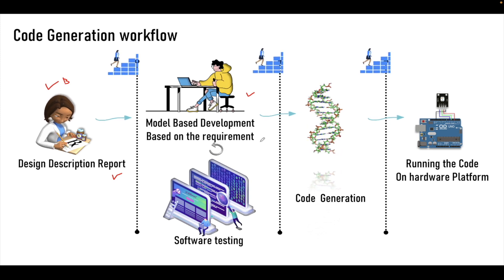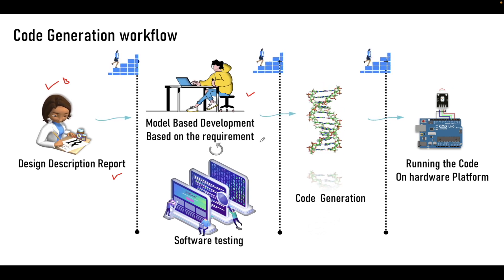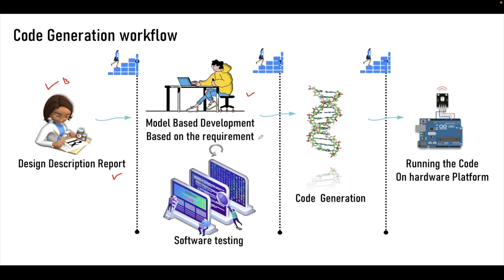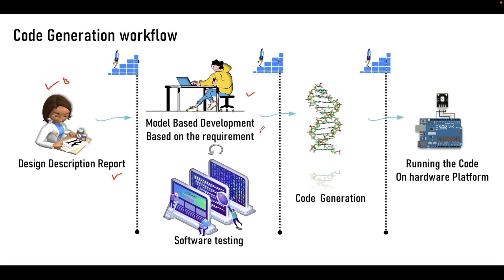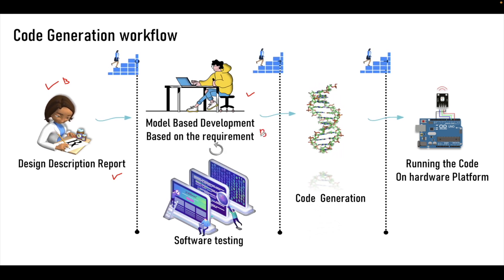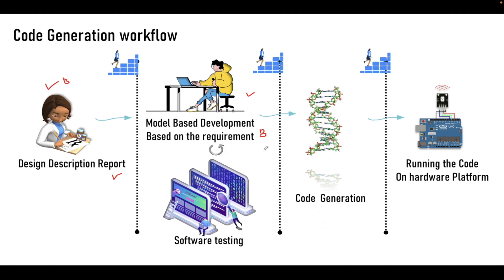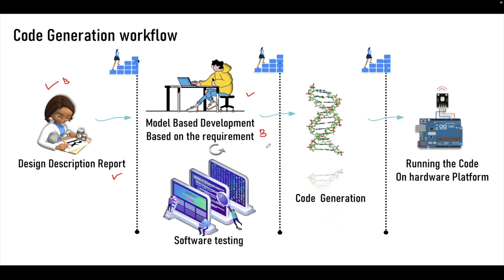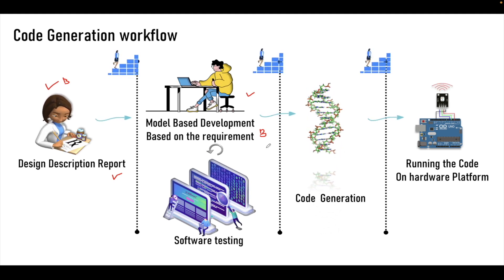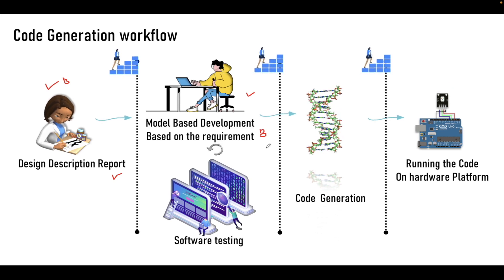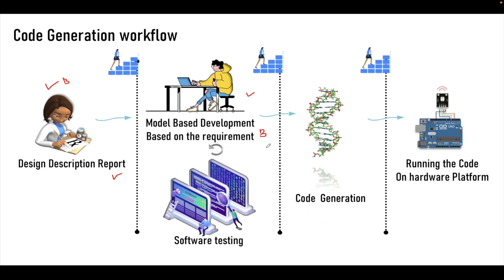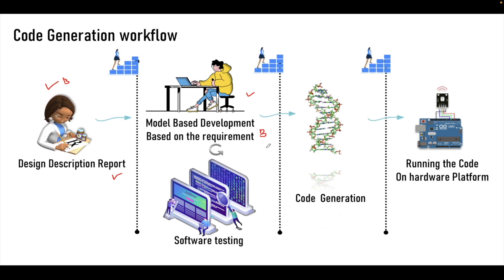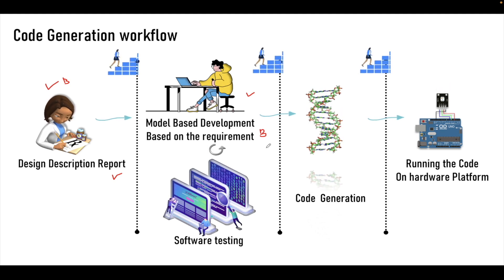As the name suggests, the model-in-loop testing can be implemented in the MATLAB model, and if there is a bug found in the particular software or model then that will be fixed and it will go to the MIL testing again. At the model level all the bugs are fixed, and once there is confidence on the model that we have developed, which is based on the requirement document, we go for the code generation.